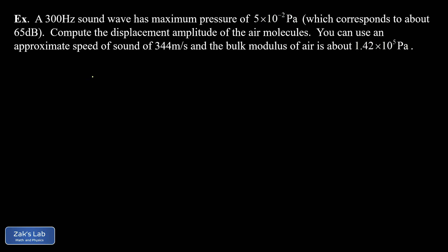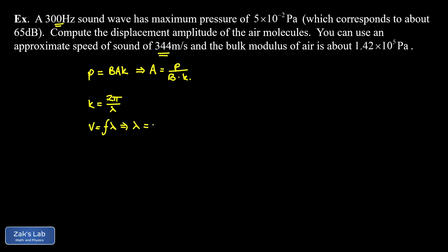Using our formula P = BAk, we solve for displacement amplitude: A = P / (Bk). We already know the pressure amplitude and bulk modulus, so we need the wave number k. Since k = 2π/λ and we weren't directly given the wavelength, we use the wave speed equation v = fλ to get λ = v/f, so k = 2πf/v. Substituting into our formula gives A = Pv / (2πfB), and now we can plug in all the numbers.